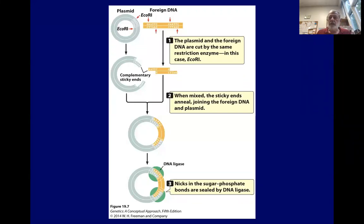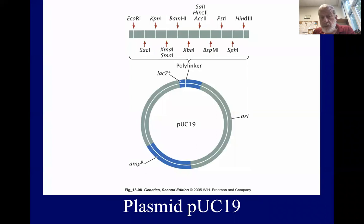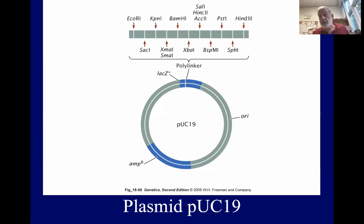This shows the steps in creating a recombinant DNA molecule — taking the gene of interest, in this case the yellow DNA fragment, cutting it again with EcoR1, then cutting the plasmid with EcoR1, mixing the two together with DNA ligase, and getting recombinant DNA molecules. Here's a plasmid called PUC-19. It has its ORI, its ampicillin resistance gene on the lower left, and a polylinker region where we insert our gene of interest, blown up to show several restriction enzyme recognition sites engineered in.